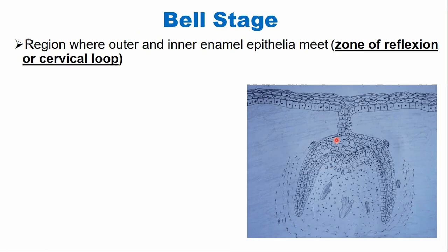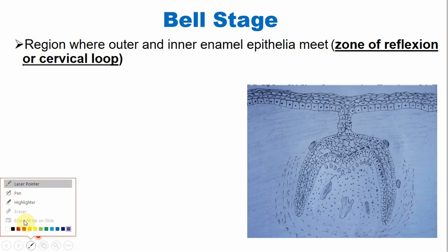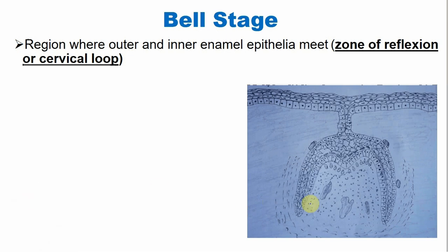The outer enamel epithelium and the inner enamel epithelium meet at a point. This point is known as the zone of reflection or cervical loop — the area where the outer and inner enamel epithelium unite with each other. This area basically helps in the formation of the root, which we will discuss later.